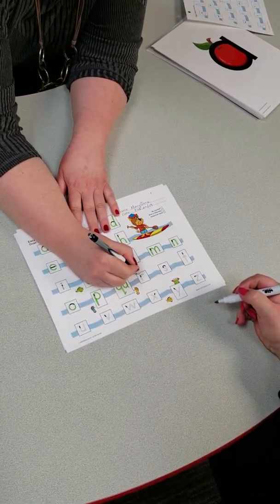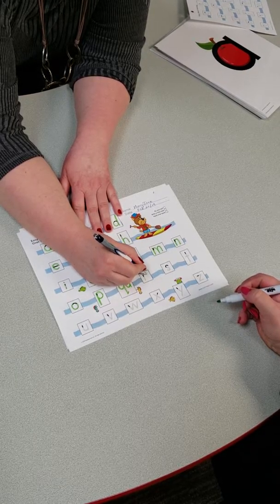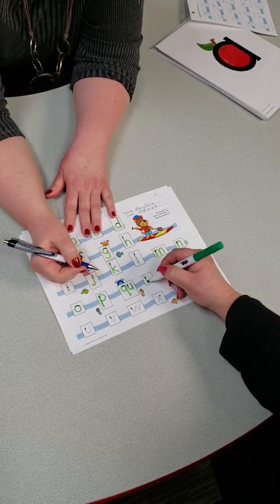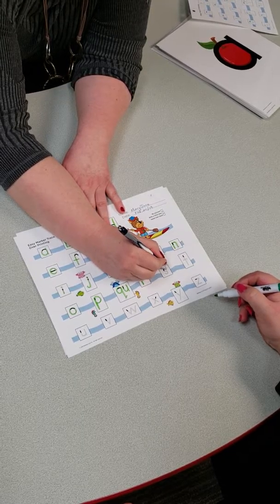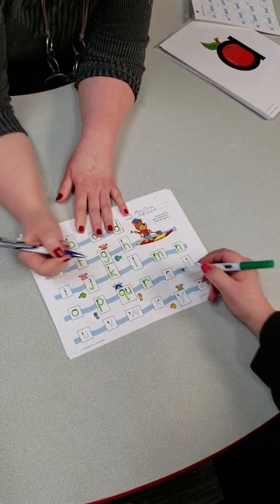R is for rainbow—down, up, and over. S is for snake—just follow the trail.